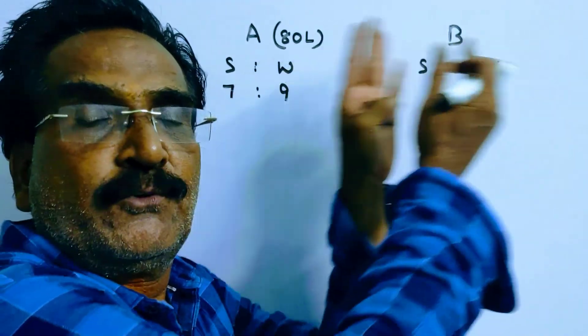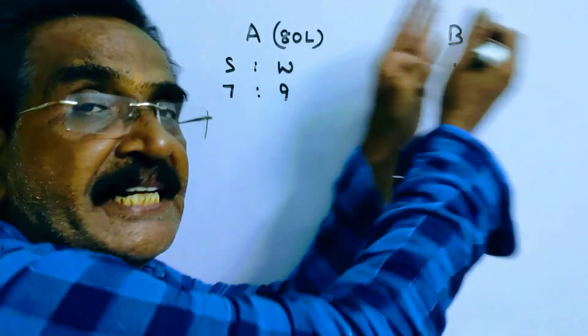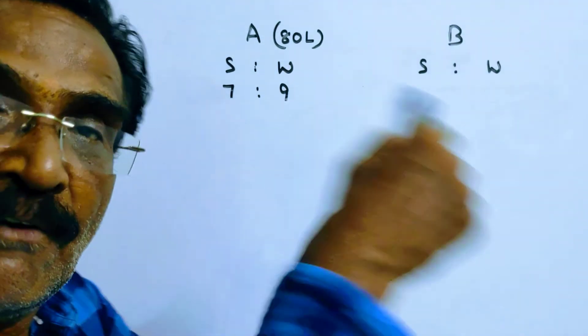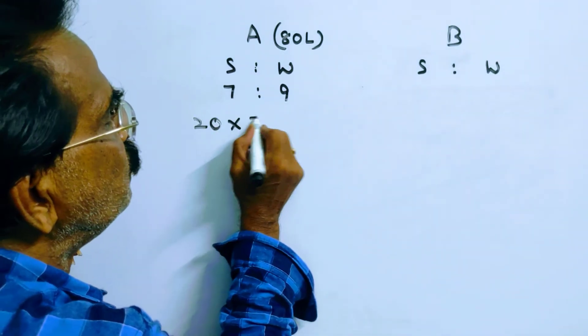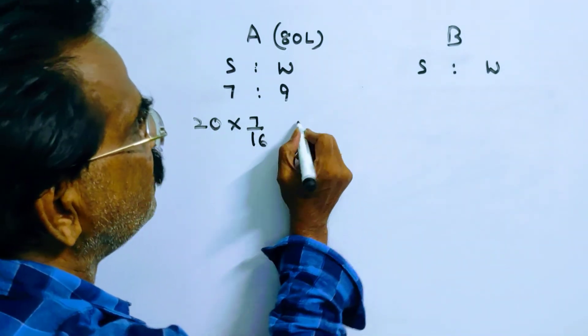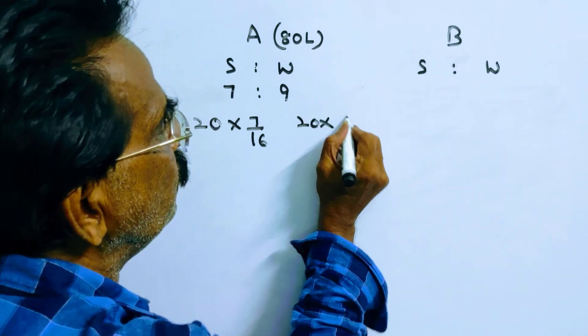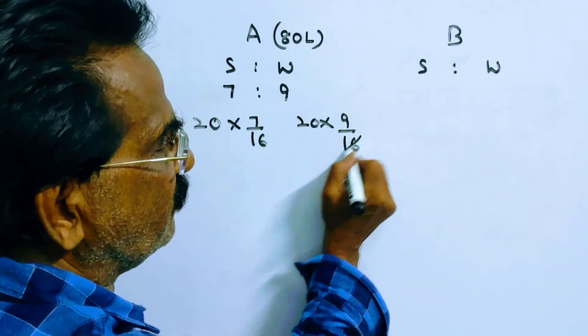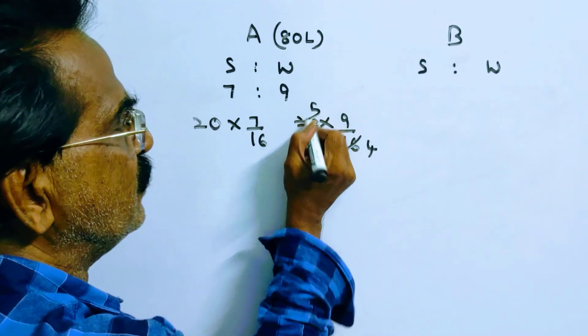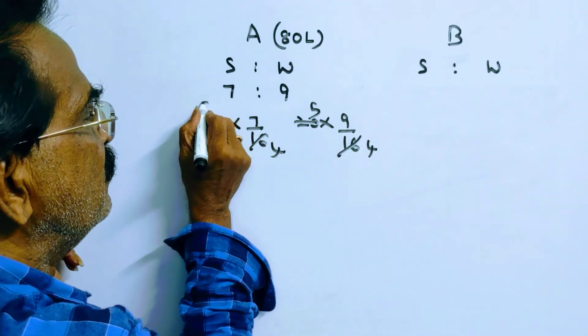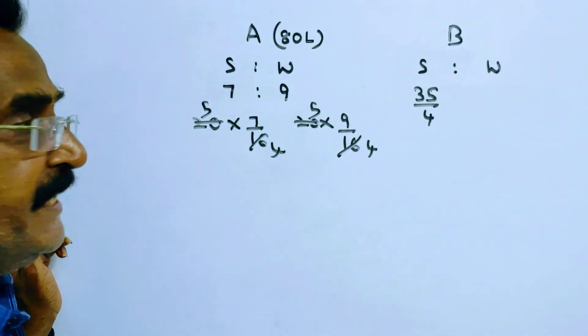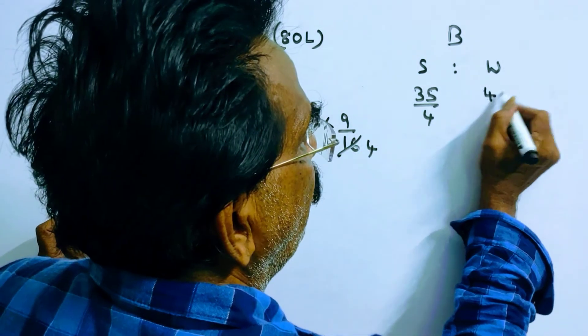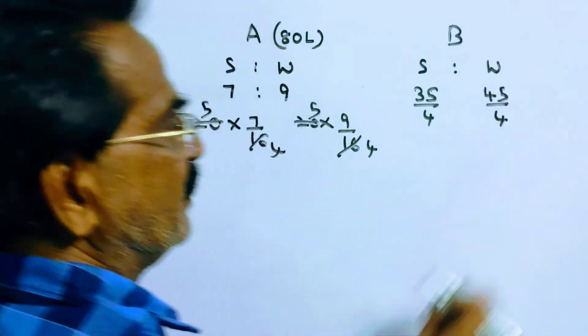If 20 liters of mixture is transferred to container B, how much spirit and water is transferred? 20 × 7/16 spirit is transferred, 20 × 9/16 water is transferred. So 35/4 liters spirit is transferred, and 45/4 liters water is transferred.